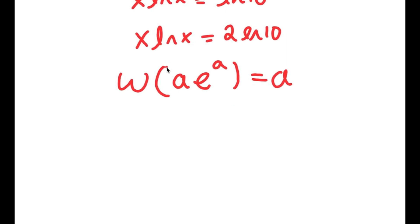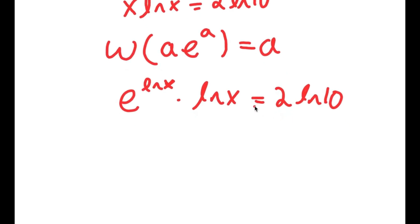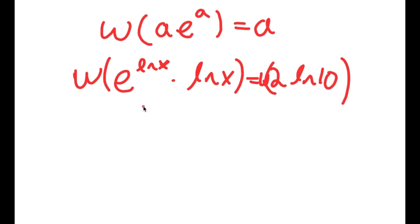So what I want to do is rewrite x as e to the power of ln x, because e and ln cancel out, and this results in simply x. So I rewrite x as e to the power of ln x, and I have this times ln x is equal to 2 times ln 10. This is now in the form a times e to the power of a. So if I take the Lambert W function on both sides, this results in ln x equaling W of 2 times ln 10.